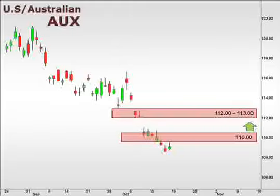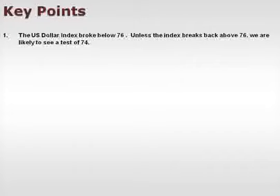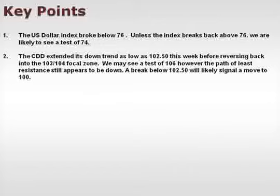Let's take a look at a few of our key points. First of all, the U.S. dollar index broke below 76, and unless we see the index break back above this 76 focal zone, we are likely to see a test of 74. The CDD extended its downtrend as low as 1.02.5 this week before reversing back into the 1.03-1.04 focal zone. We may see a test of 1.06. However, the path of least resistance still appears to be to the downside. A break below 1.02.5 will likely signal a move to 100, which is U.S.-Canadian dollar par.